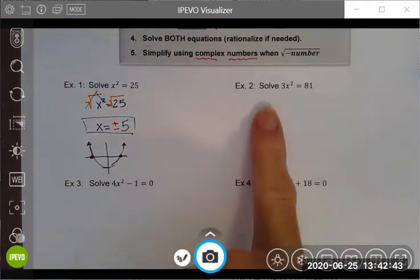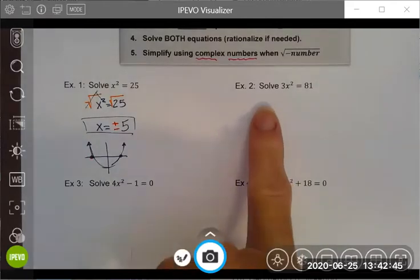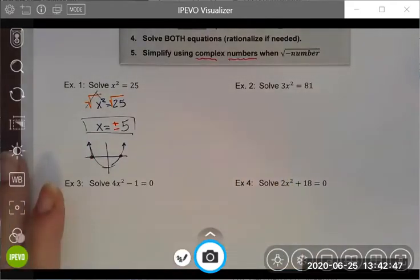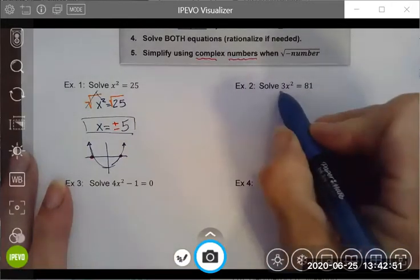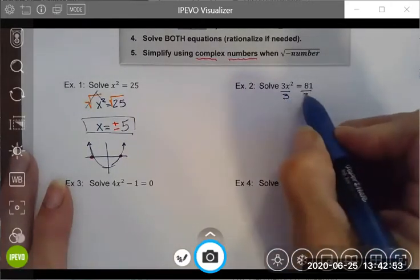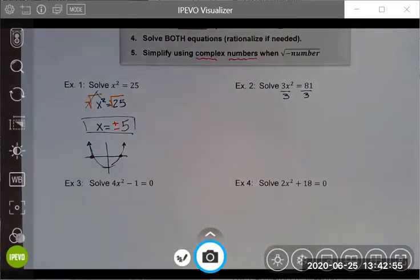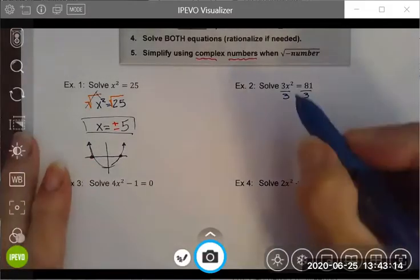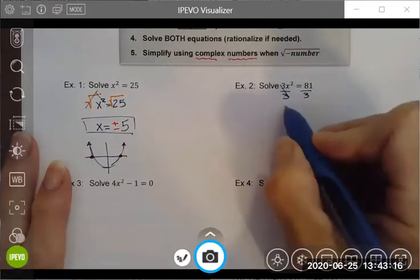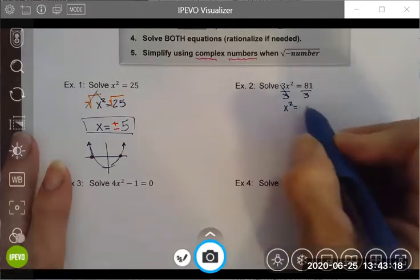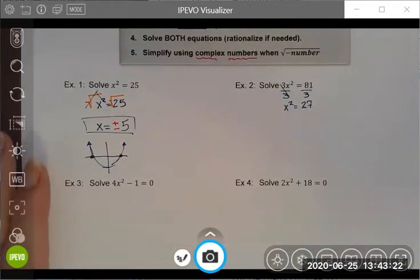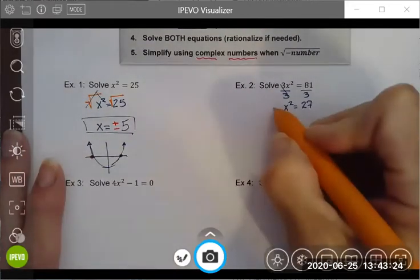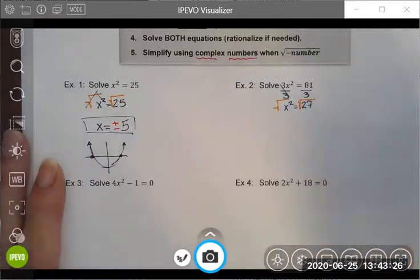For the next one, the first thing I need to do is isolate my variable. In this one, I notice that I am multiplying the x squared by the term three. These threes will cancel out, and now I have an isolated variable x squared. Step two is to take the square root of both sides.